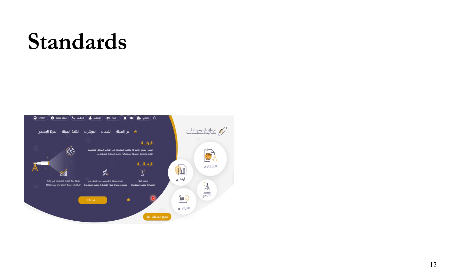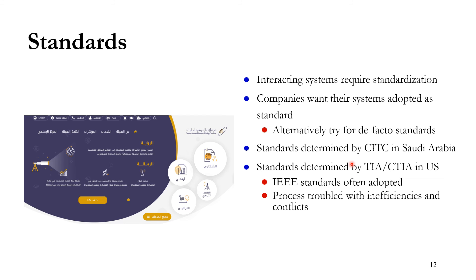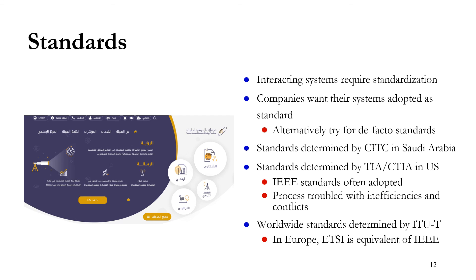Before we go further into the course, you need to understand that there are standards — you can't just come up with your own design; you have to respect the standards. Standards allow interoperating systems to work together. Every company wants its own standard, but we have to respect regulations. Sometimes there are de facto standards set by large, powerful companies. Standards are determined by CITC in Saudi Arabia, by TIA and CTIA in the US, and the process of standardization is not easy because of conflicting interests from different companies.